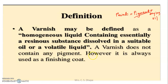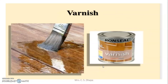Varnish does not contain pigment. In paint, pigments are present, but in varnish, pigments are absent. Mostly, varnish is used to give a finishing look. You have seen the doors and windows at home with a shiny, beautiful finishing look. The oil acts as a vehicle — that is the varnish.